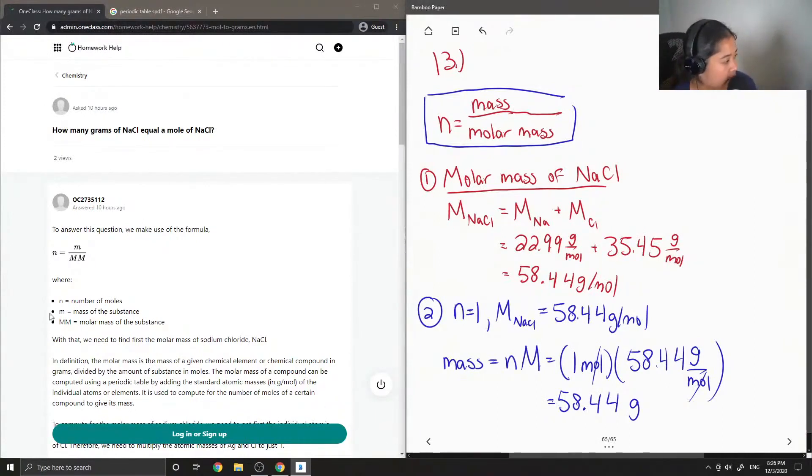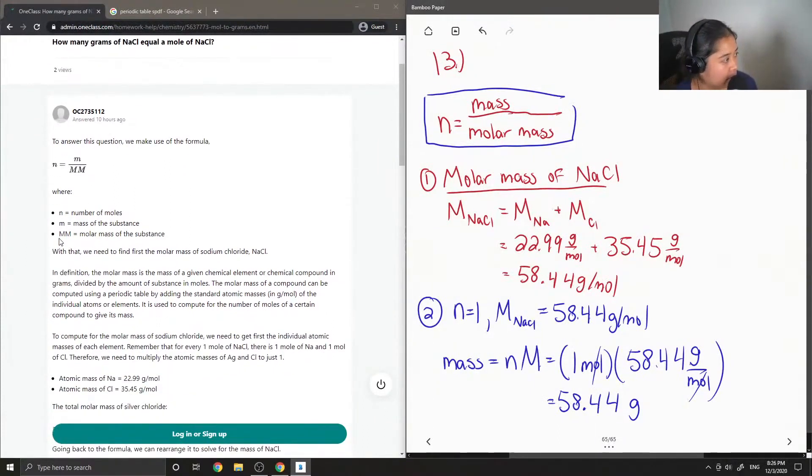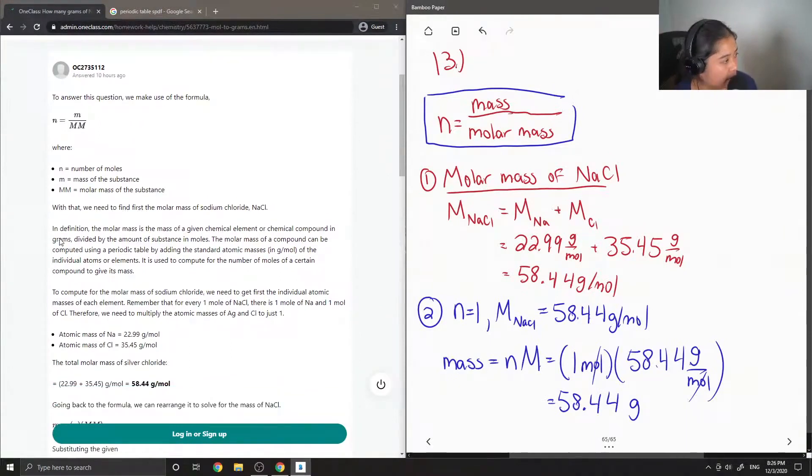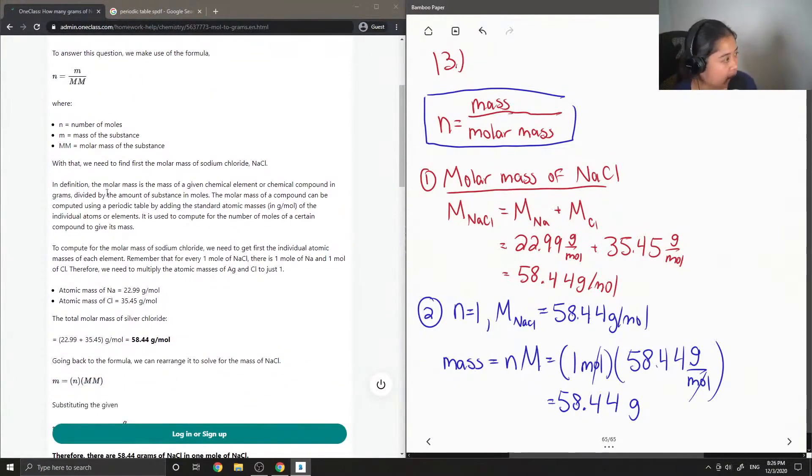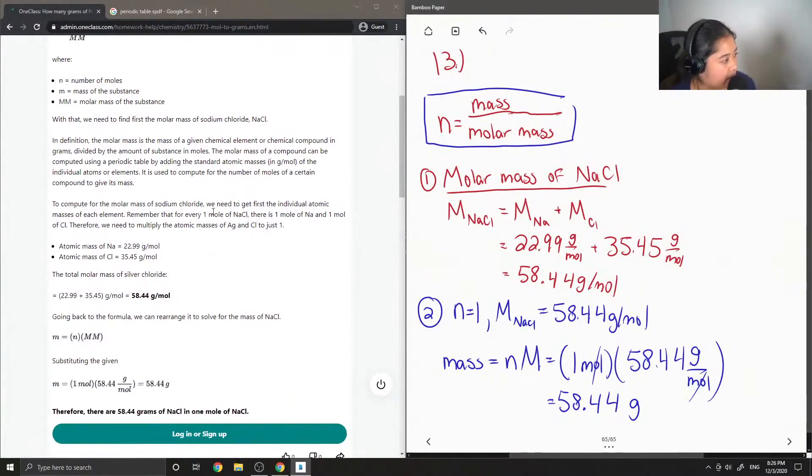So the junior tutor said to answer this question, we use the formula number of moles is equal to mass over molar mass. In definition, the molar mass is the mass of a given chemical element or chemical compound in grams divided by the amount of substance in moles. So yep, so in grams per mole.